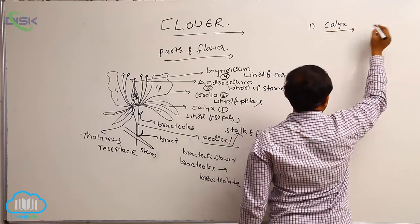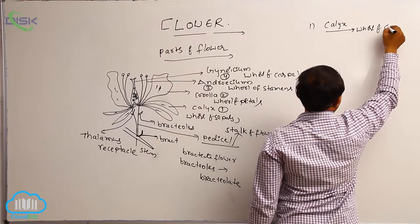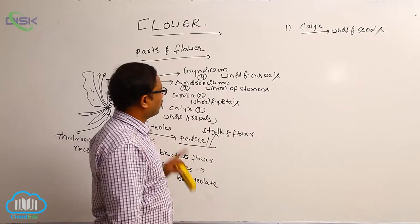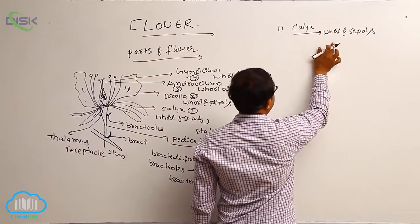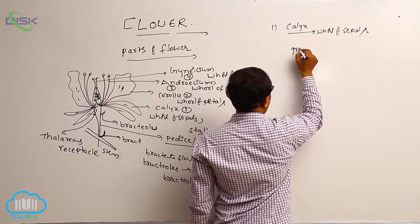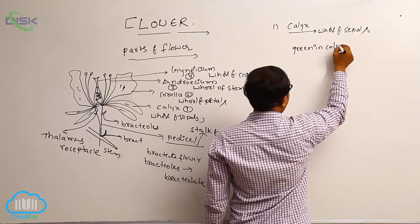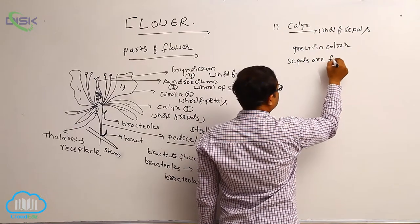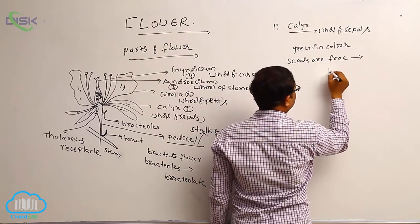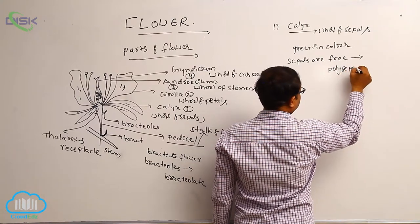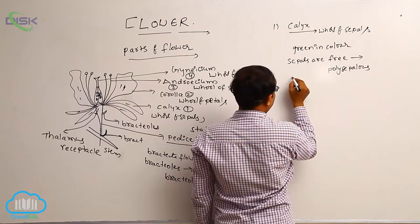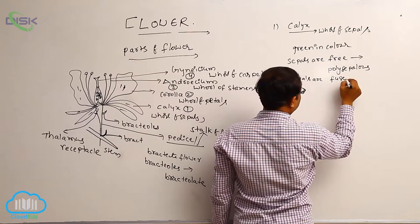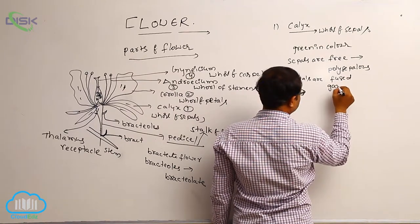Calyx means whorl of sepals. Whorl of sepals is known as the calyx — it is the outer whorl of the flower. This calyx, the sepals, are generally green in colour. If sepals are in free condition, that is known as polysepalous. If sepals are fused, that is known as gamosepalous.